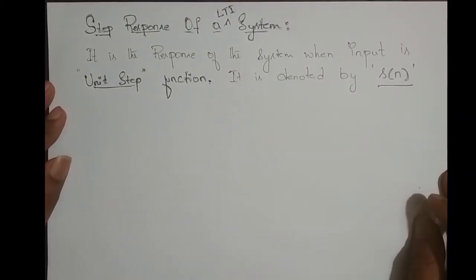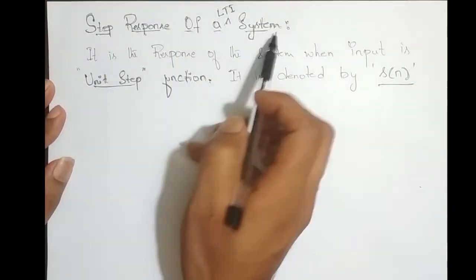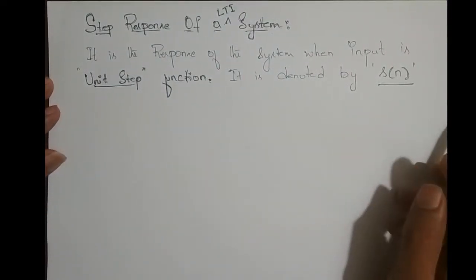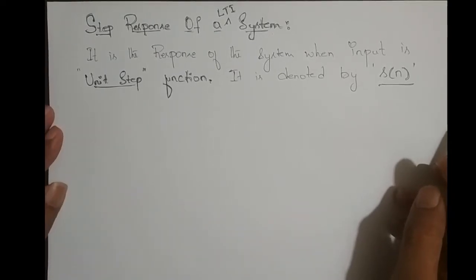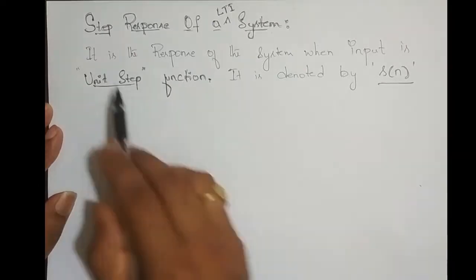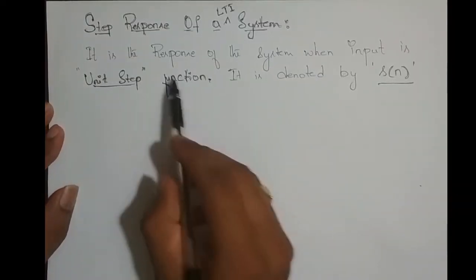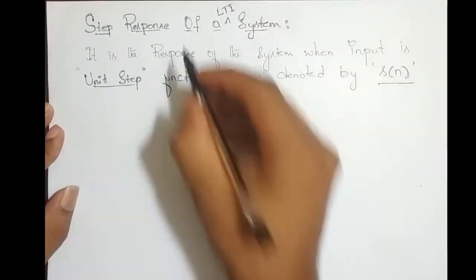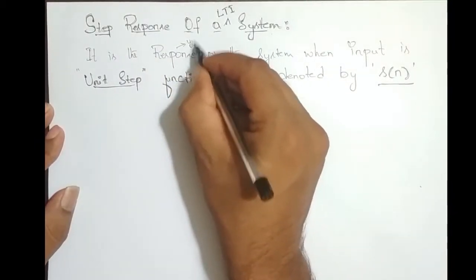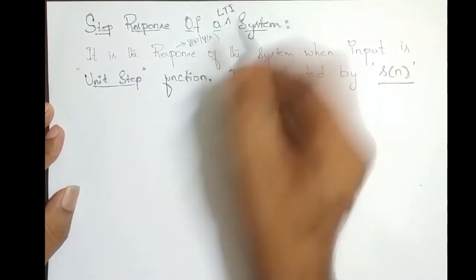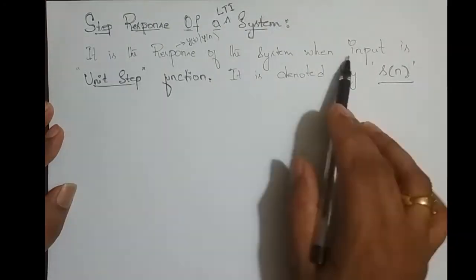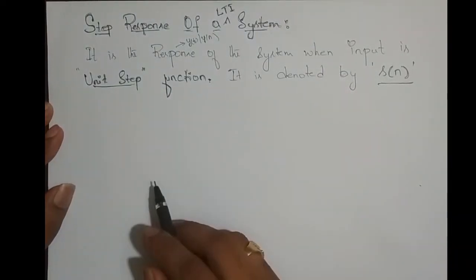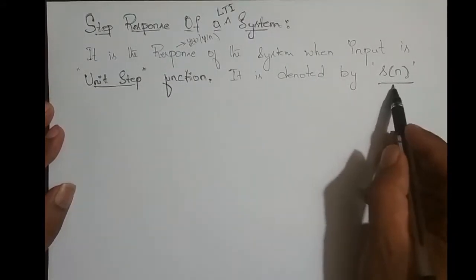In this video we shall try to define the step response of an LTI system, and also derive the step response of both continuous time as well as discrete time LTI systems. It is defined as the response of the system — that is, the output y(t) or y(n) — when the input to the system is a unit step function, and it is denoted by s(n).